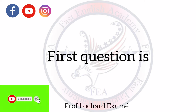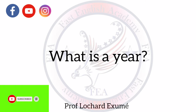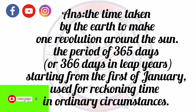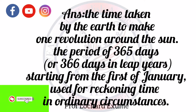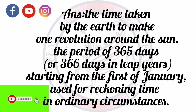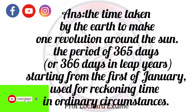First question: what is a year? The answer — it's the time taken by the Earth to make one revolution around the Sun. Or it's a period of 365 days, or 366 days in leap years, starting from the 1st of January, used for recording time in ordinary circumstances.